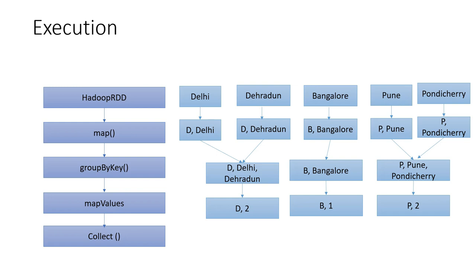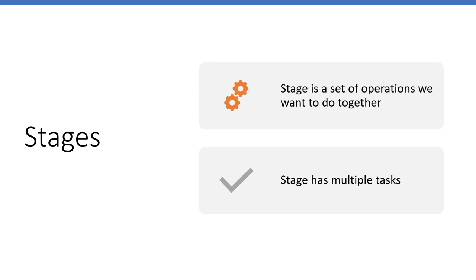Spark groups steps that make sense to be performed together, and that is known as a stage — sometimes called a pipeline. A stage is a logical unit where grouped operations run on the same partition without depending on any other data. This avoids unnecessary shuffles across the network, which are the costliest operations in Spark.